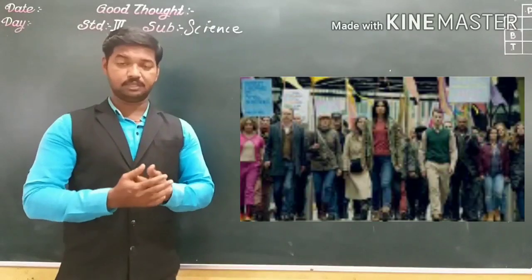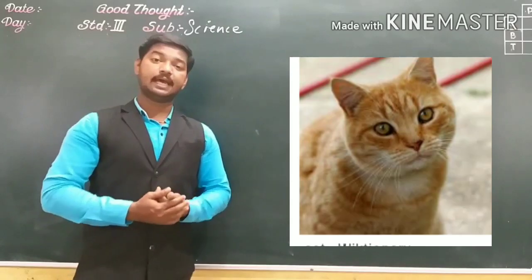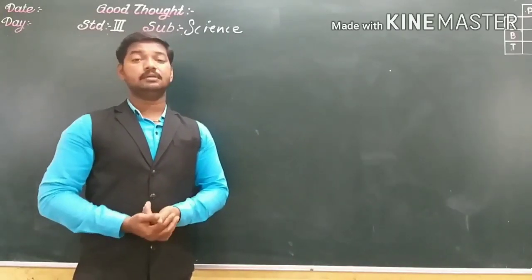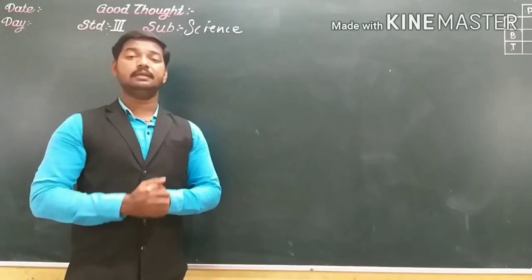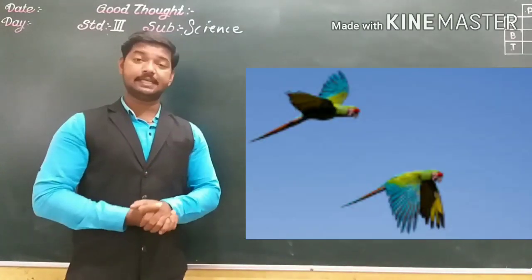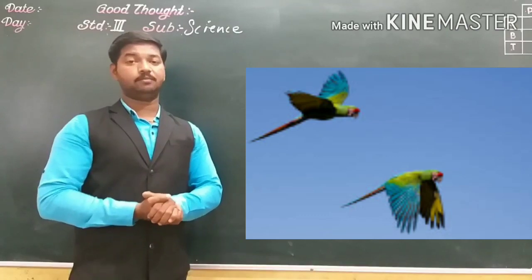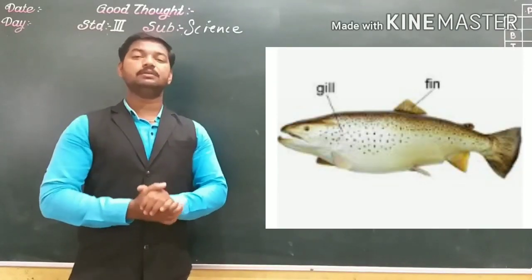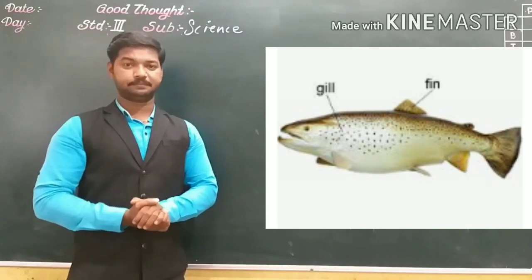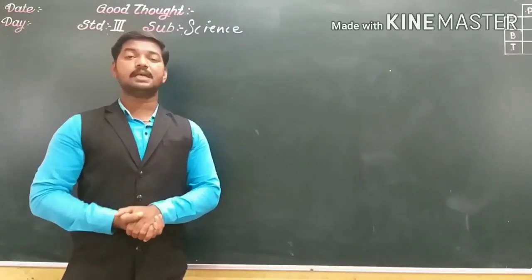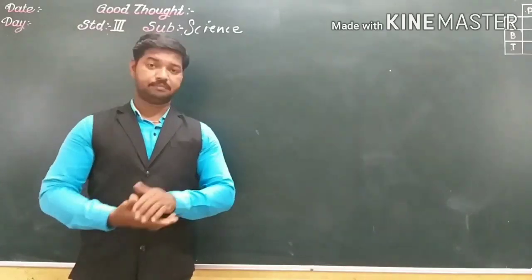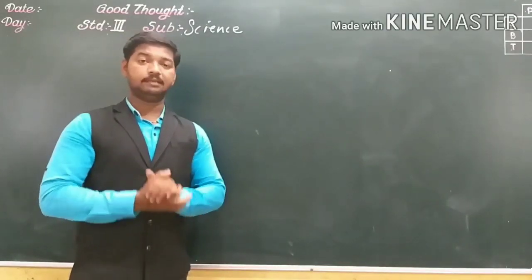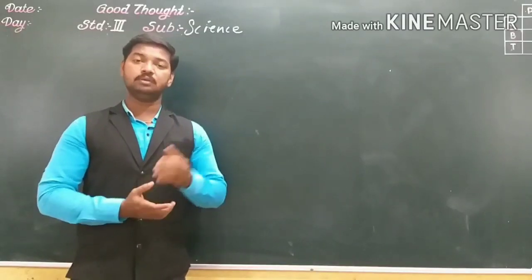Different animals move in different ways. Humans — we move with our legs. Animals like cat, dog, tiger, lion — they also move with their legs. Birds and insects fly with the help of wings. And fishes swim with fins. So these living things show movement and have body parts which help them to move from one place to another.